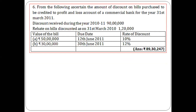The next question is a bit lengthy. It asks us to ascertain the amount of discount on bills purchased to be credited to the Profit and Loss account of a commercial bank for the year ending 31st March 2011. Discount received during the year is 90 lakhs. Rebate on bills discounted as on 31st March 2010 — that is last year's rebate, so it is an opening rebate. Opening rebate will be added and closing rebate will be deducted. We must calculate the closing rebate.